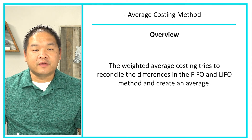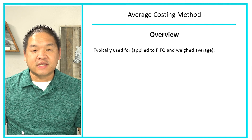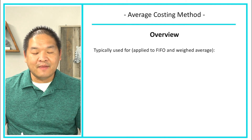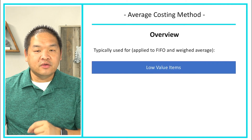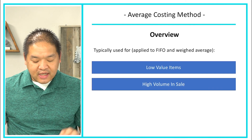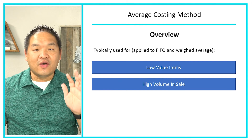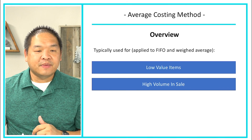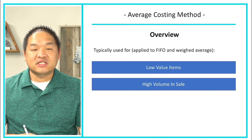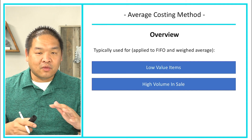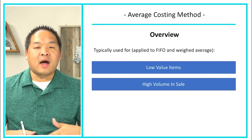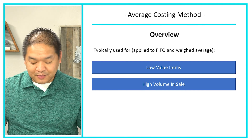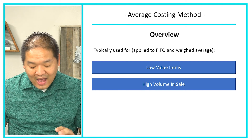When do we use weighted average? Weighted average is usually used for low value, high volume items — meaning items that are not terribly expensive and that we sell a lot of, when compared to things like cars, jewelry, boats, or homes. So low value items, high volume in sales.